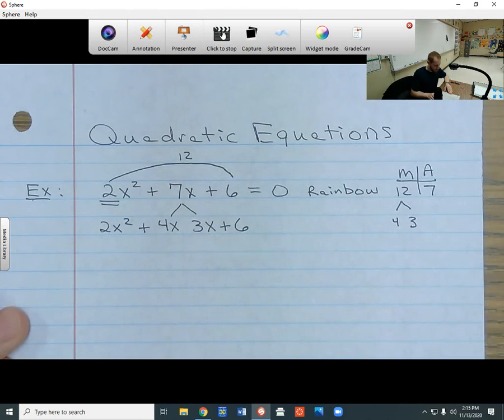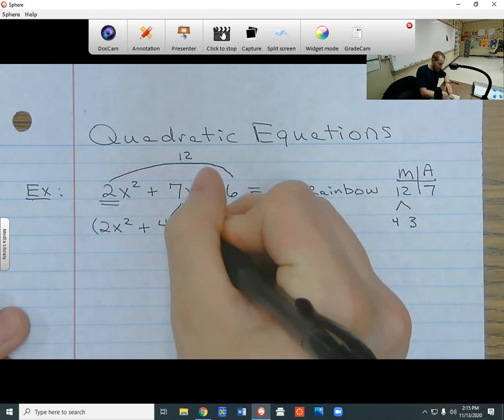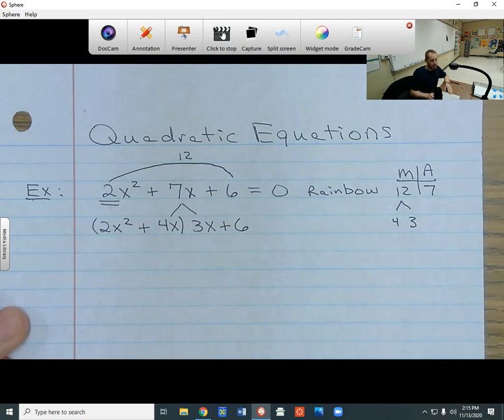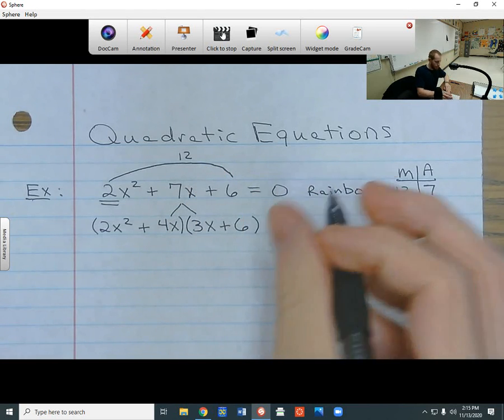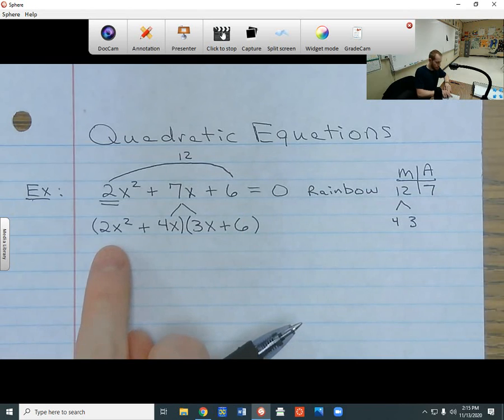Okay, so now I have 4 different terms. I'm going to group the first two terms in parentheses like this. And then I'm going to group the last two terms in parentheses the same way. So now I have two different groups: my 2x squared plus 4x, and my 3x plus 6.